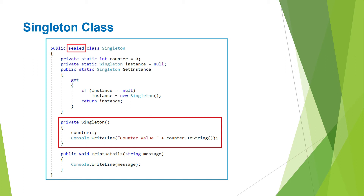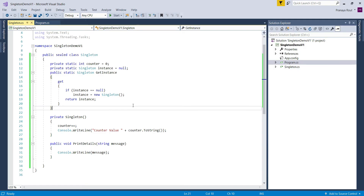The following singleton class was created in our previous video. As you can notice, we created the class as sealed and we have a parameterless private constructor. Now let us understand why the singleton class is sealed in C# with one example. Let's move to Visual Studio. This is the singleton class that we created in our previous video — the class is sealed and the constructor is private.